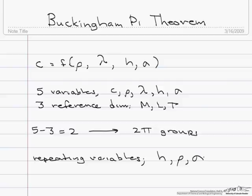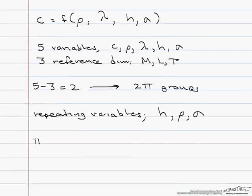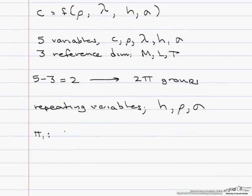So now let's take a look at our pi one. Pi one is going to involve c and then our repeating variables h, rho, and sigma. So let's look at their dimensions,